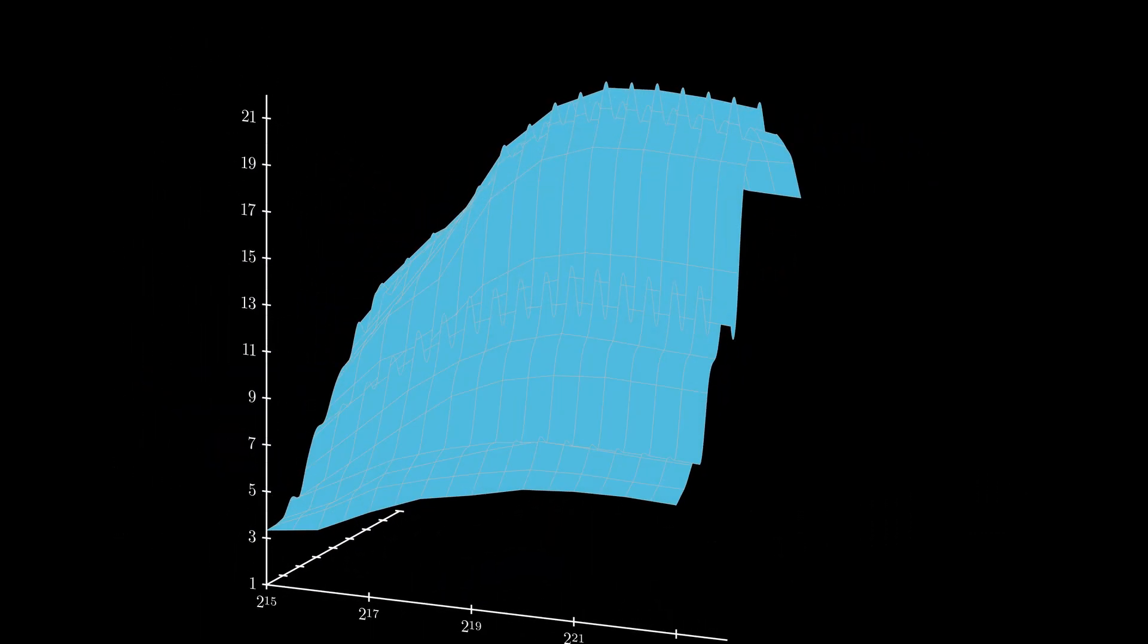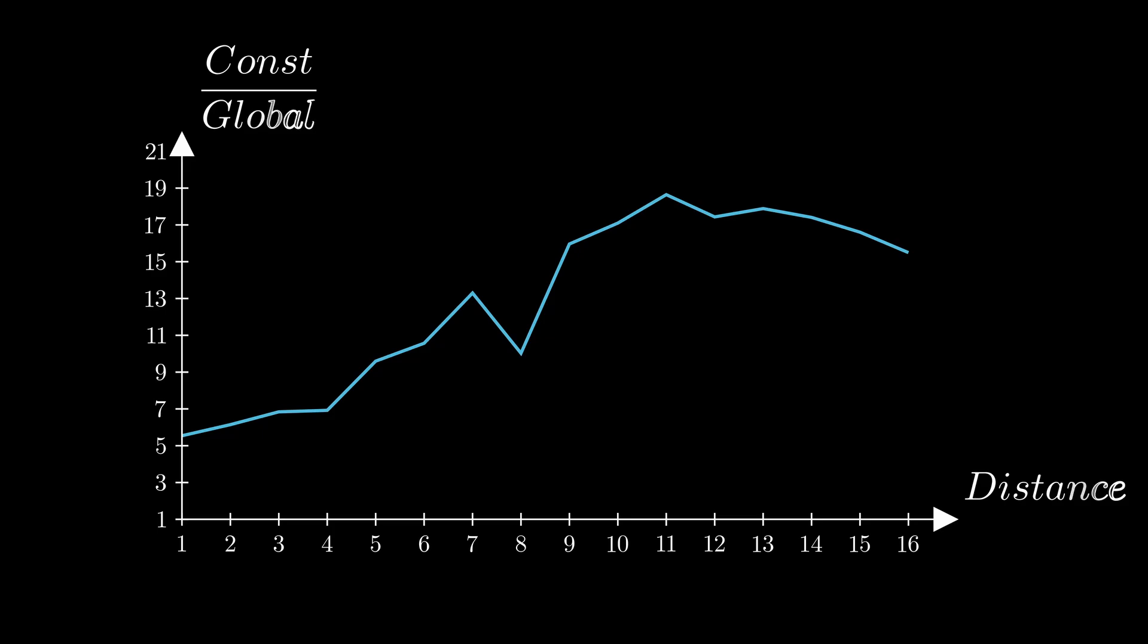Looking at what happens to our performance as we make our threads access locations further and further away from each other, and averaging those again for readability, we can see that our performance can get up to 18 times worse.